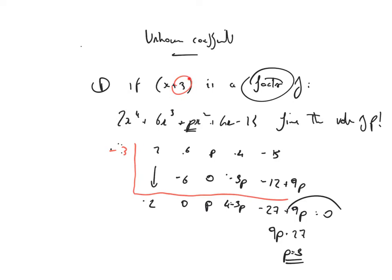I'm told that x plus 3 is a factor, minus 3 gets up to the side, coefficients of 2, 6, p, 4, minus 15, and the target is to find the value of p. Drop the 2 down.